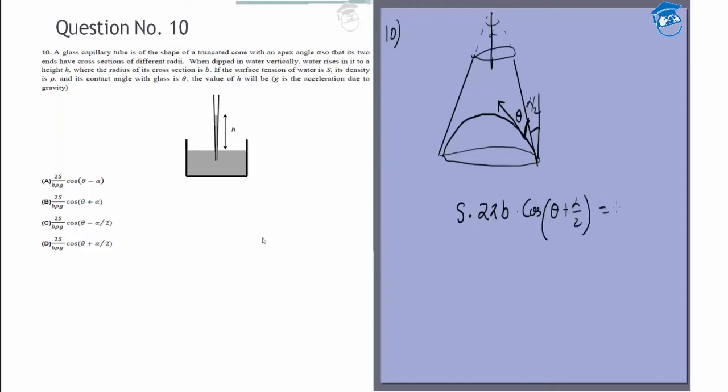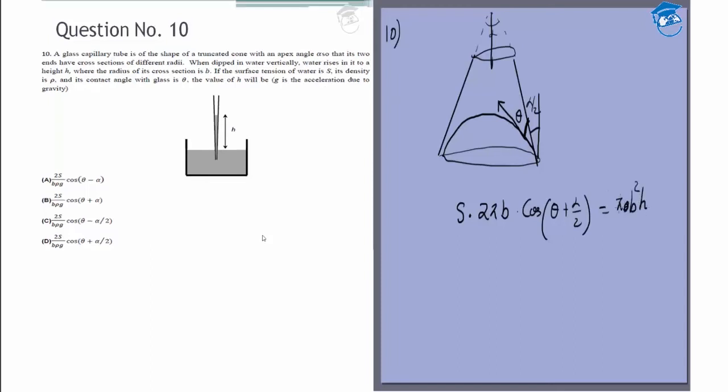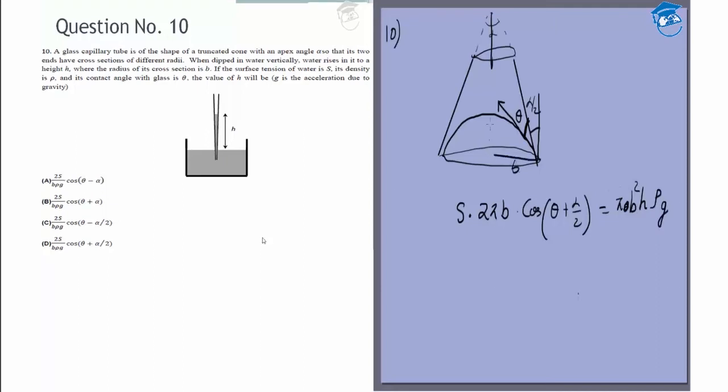That is equal to the net gravitational force, which is πb²h ρg, because we are given this is b and this height is h.